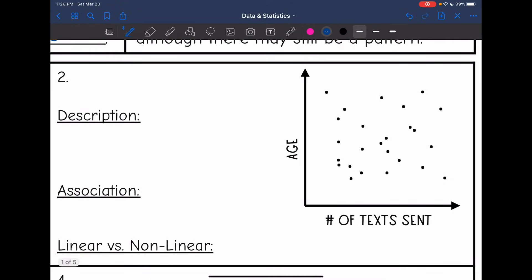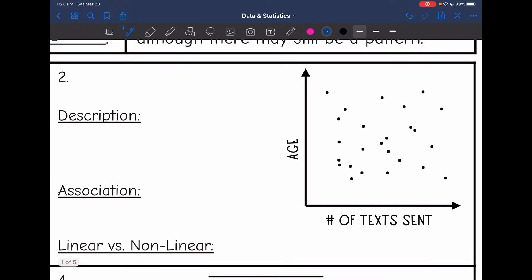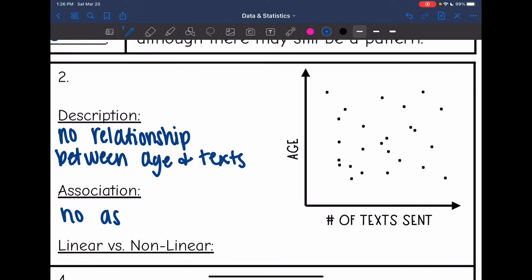Let's look at the next one. This one, I do not see any sort of pattern going on here. So we would say there is no relationship between the number of texts sent and the age. The association would be no association. There's not anything going up or down. There's no pattern here. So this is no association. And then obviously, since there's no association, this would be non-linear.